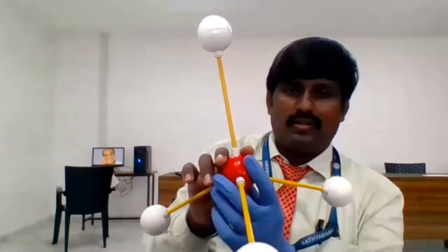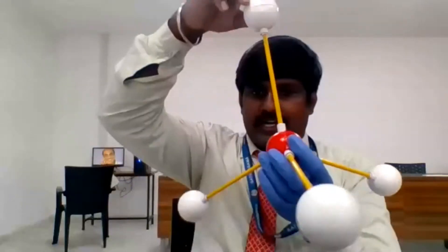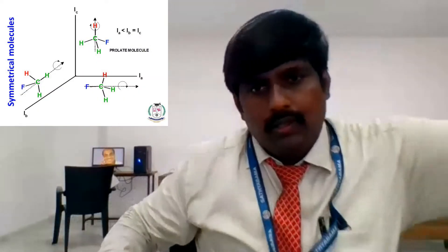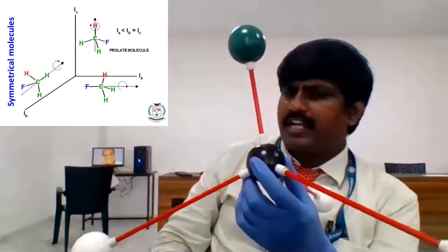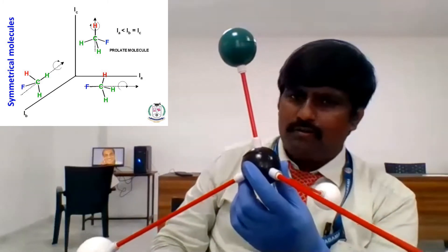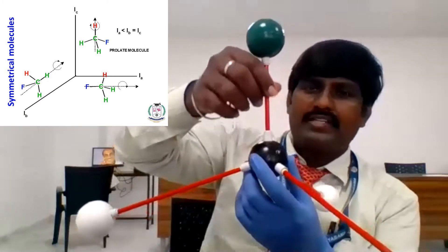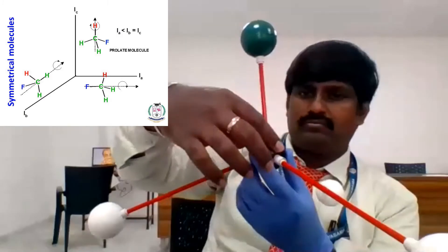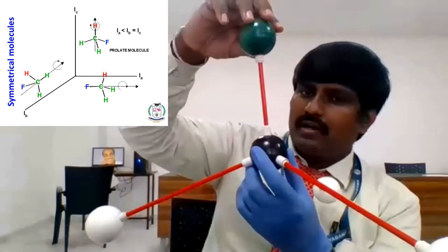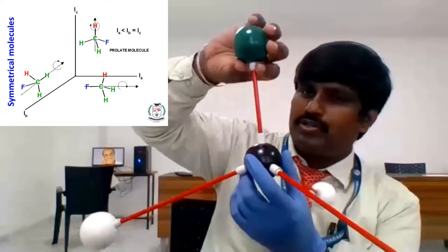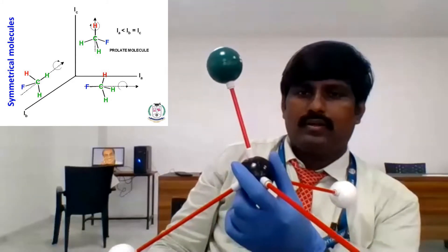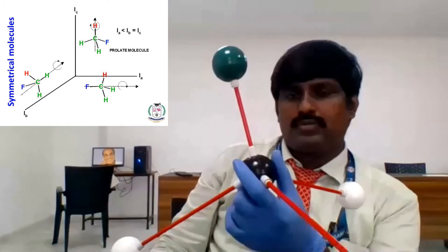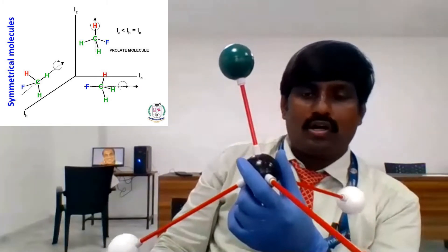Let us make one small modification. Instead of one hydrogen, I will replace the hydrogen atom with chlorine — methyl chloride. Now whether this molecule is spherical? No, it is not spherical. Because with respect to the z-axis, we have replaced the hydrogen atom with chlorine or fluorine, so it is not a spherical molecule. That means i-a, i-b, i-c are not equal for this molecule.